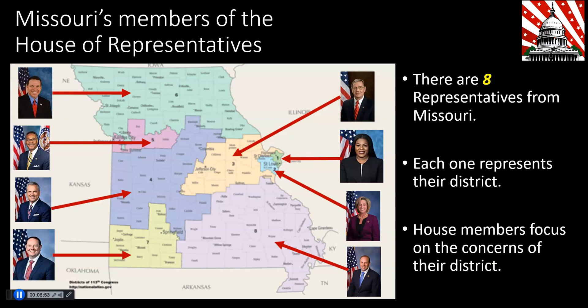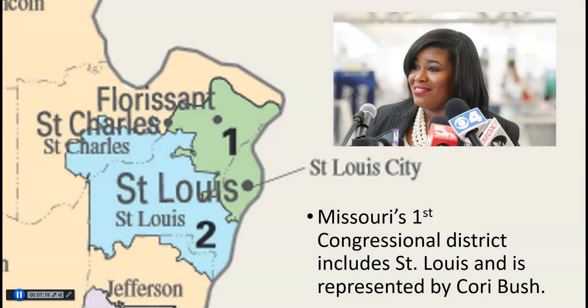House members focus very closely on the concerns of their own district. So Cori Bush is going to focus on the concerns of district one, and other representatives will be concerned about the interests of the people from their districts. Missouri's first congressional district includes St. Louis City and a little bit of St. Louis County — mostly the city of St. Louis — and Cori Bush is the representative of Missouri's first congressional district.